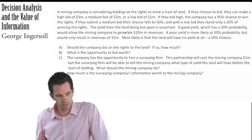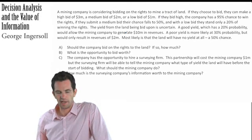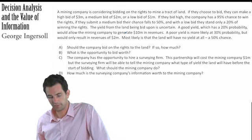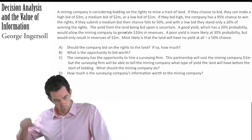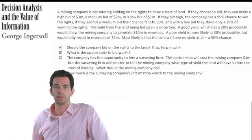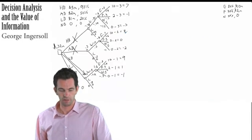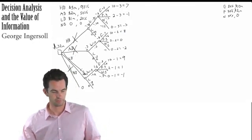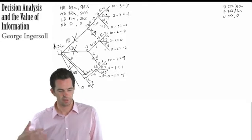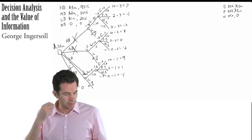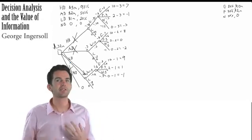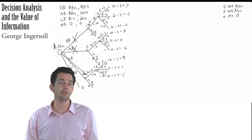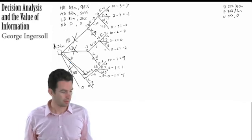Because part C for that question asks, the company has the opportunity to hire a surveying firm. This partnership will cost the mining company $1 million, but the surveying firm will be able to tell the mining company what type of yield the land will have before the start of bidding. What should the mining company do? All right. So again, we're going to have to use a decision tree to find the answer to this. In the last video, we determined that the correct course of action for the mining company was going to be to throw out a low bid of $1 million, and they would have an expected outcome based on the whole bidding process of $320,000. But now this adds a wrinkle. Now there's this possibility that they're going to be able to know whether the land is going to have a good yield, poor yield, or no yield at all before they even start bidding. So let's figure out what they want to do here.